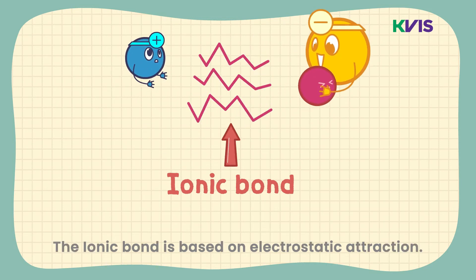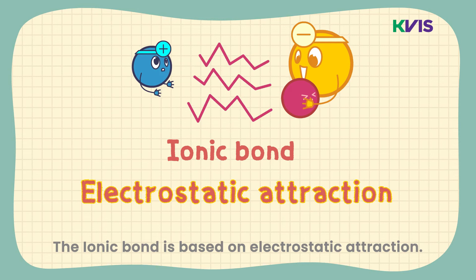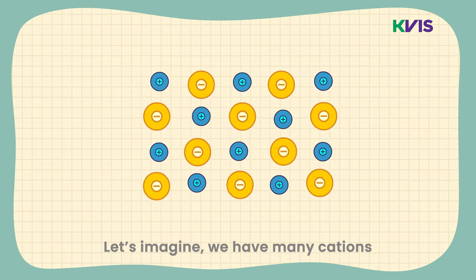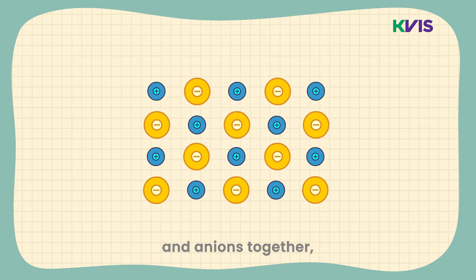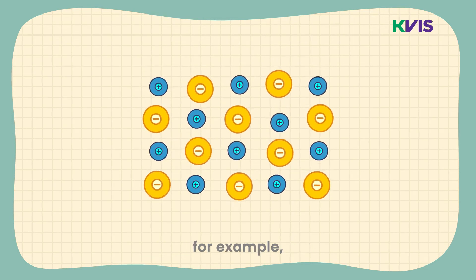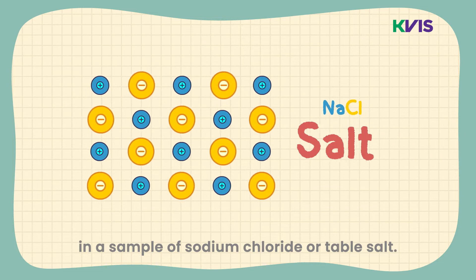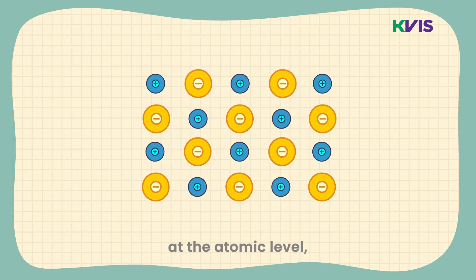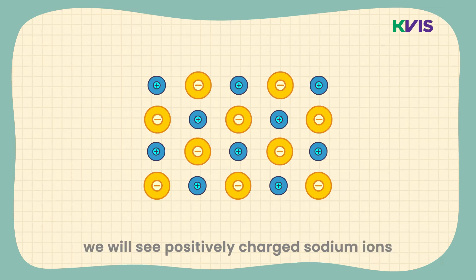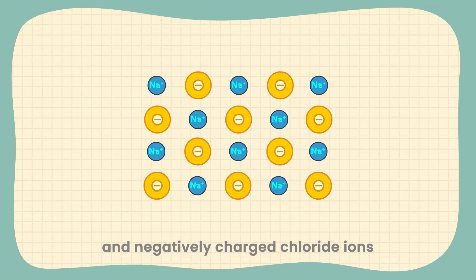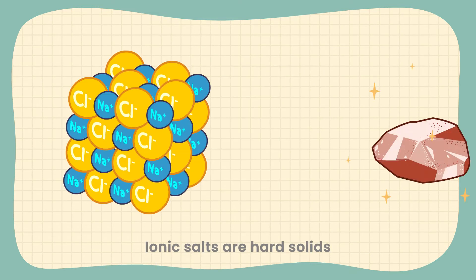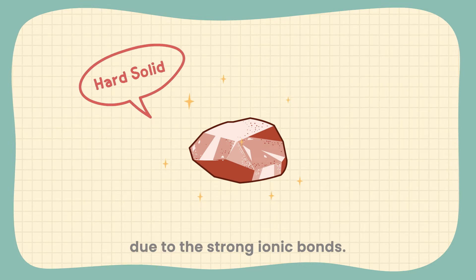The ionic bond is based on electrostatic attraction. In a sample of sodium chloride, or table salt, if we consider the structure at the atomic level, we will see positively charged sodium ions and negatively charged chloride ions alternating in the structure. Ionic salts are hard solids due to the strong ionic bonds.